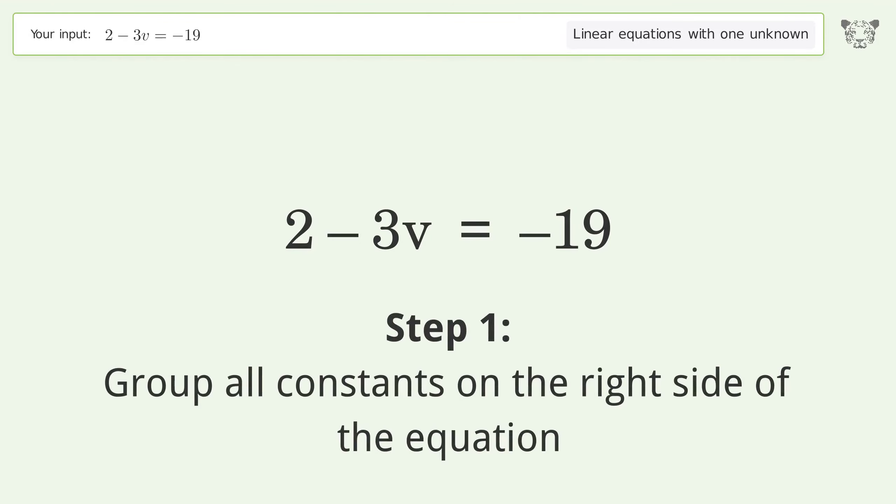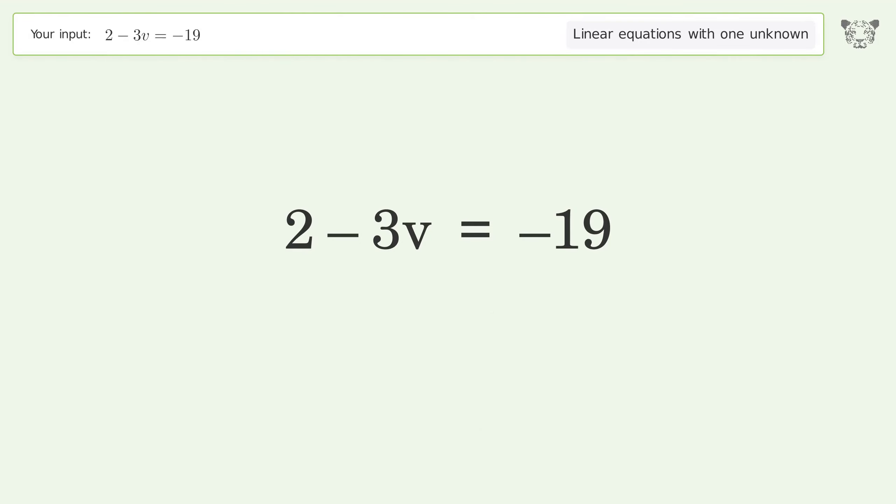Group all constants on the right side of the equation. Subtract 2 from both sides. Group like terms. Simplify the arithmetic.